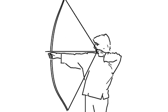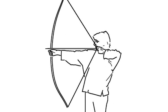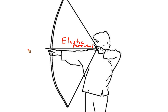For a bow and arrow, when the string is stretched and the person lets go, at the moment of being drawn we have lots of elastic potential energy stored in the stretched string. It's a stored form of energy because while the person is holding it nothing is actually happening. Once they let go and the arrow flies off, the arrow will have kinetic energy. So the elastic potential energy is converted into kinetic energy.